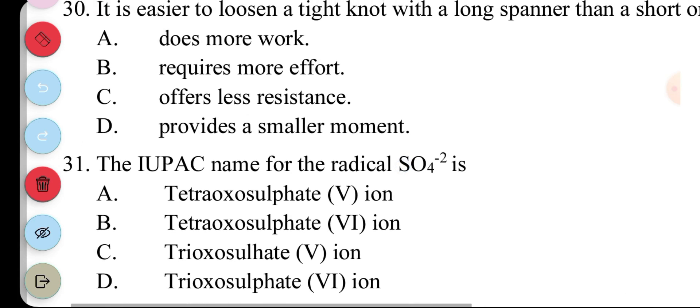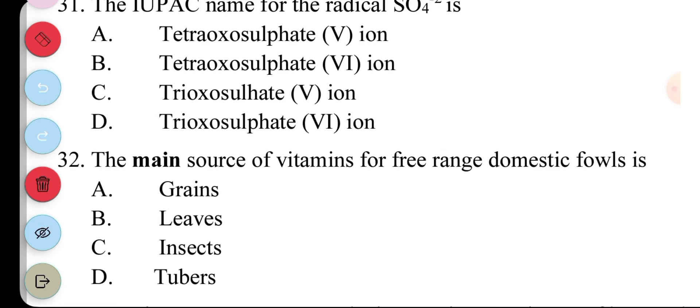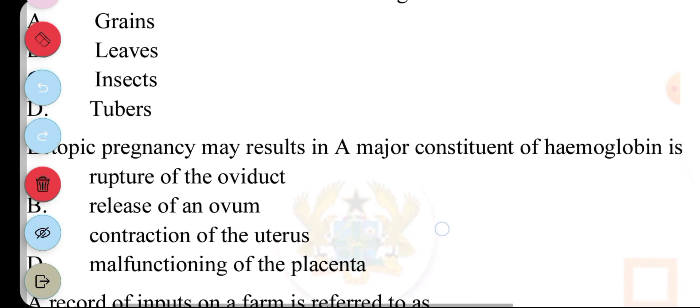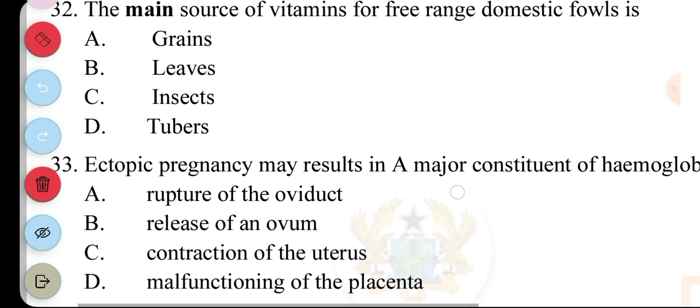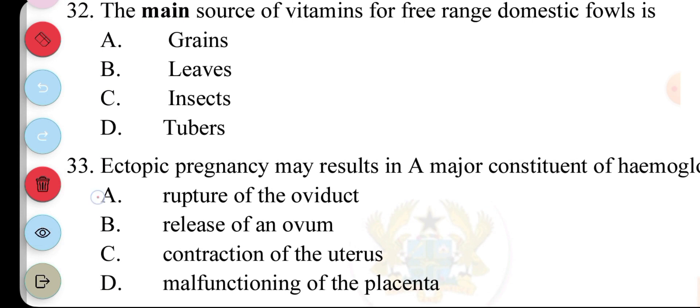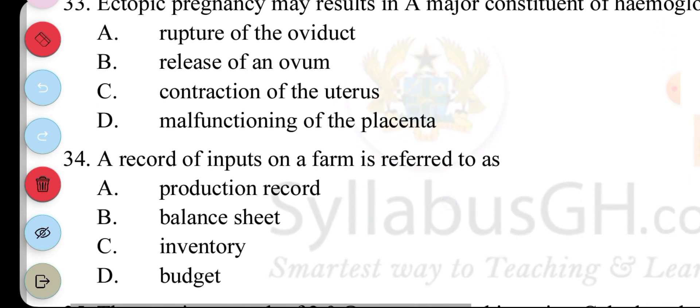Question 31. The IUPAC name for the radical SO4 2- is tetraoxysulfate-6-ion. So, the answer to 31 is B. 32. The main source of vitamins for free-range domestic fowl is... B. Leaves. 33. Ectopic pregnancy may result in... major... Constituent of hemoglobin. Is... Okay. So, the question is not very clear, but... Ectopic actually results in rupture of the oviduct. 34. The record of inputs on a farm is referred to... A. Production record. B. Balance sheet. C. Inventory. D. Budget. Question... The answer to question 34 is... A. Production record.